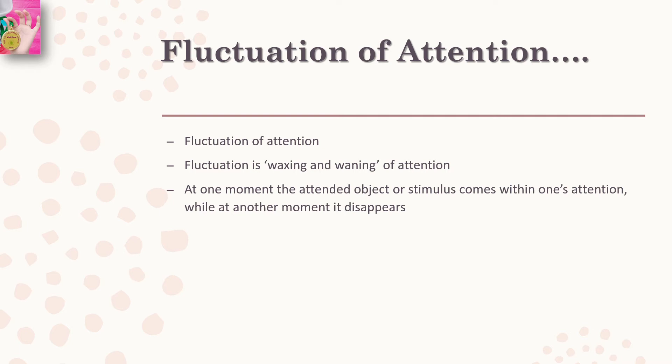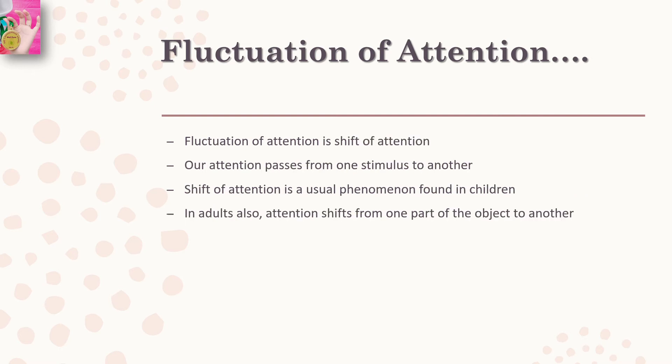This is what we call fluctuation of attention. In other words, fluctuation of attention is the waxing and waning of attention, in which at one moment the attended object or stimulus comes within one's attention, while at another moment it disappears. The same object is sometimes attended to, while at another moment it may go out of attention.